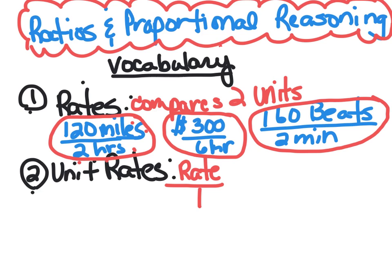The other one is related to it - the unit rate. It's a rate but it has a denominator of one. If you look at the first example here, 120 miles over two hours, you have a denominator of two.